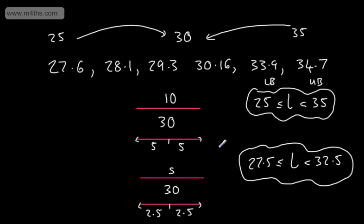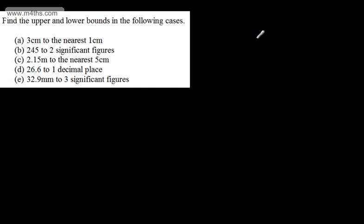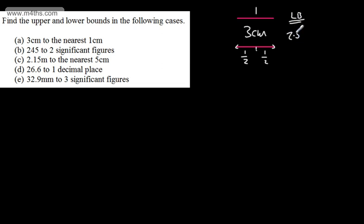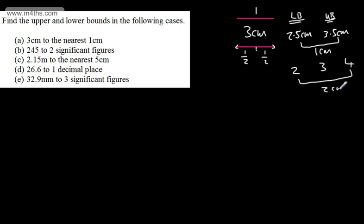We're going to work through a range of questions on upper and lower bounds, then move on to some practical examples. First: 3 cm to the nearest cm. Considering an interval of 1 cm and splitting it in half gives 0.5 cm either side, so the lower bound is 2.5 cm and the upper bound is 3.5 cm. A common error is that students put 2 and 4, which is a 2 cm interval — that is wrong.